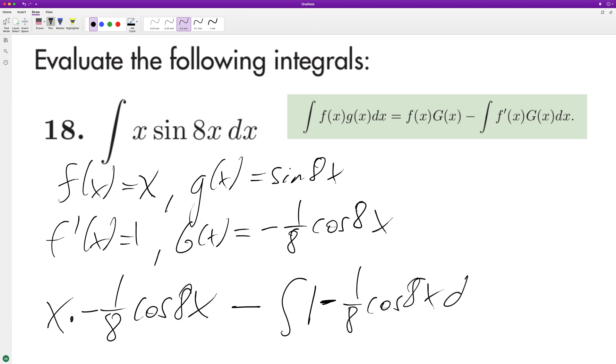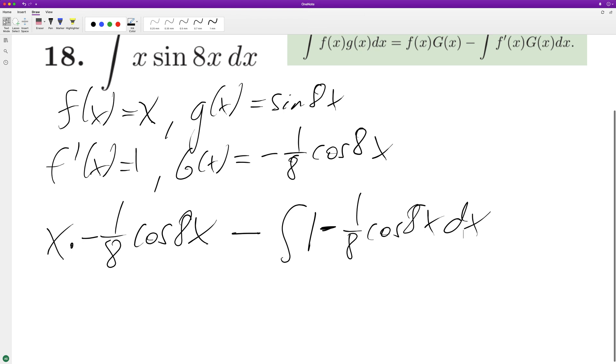Alright, so when we finish this up, we're going to have negative one-eighth x cosine 8x, and then the integral of this is going to be negative one-eighth, one-eighth sine of 8x.